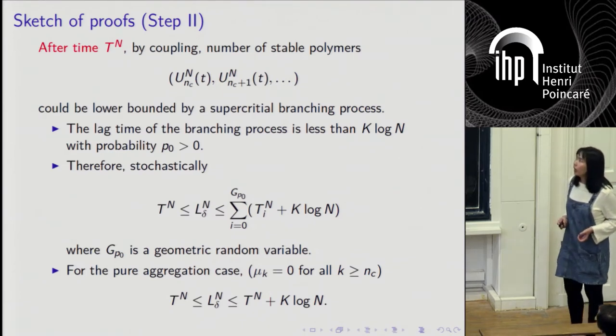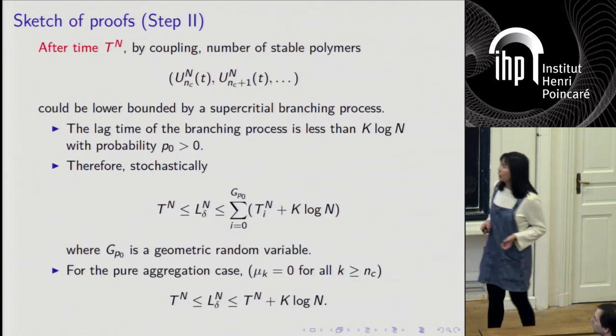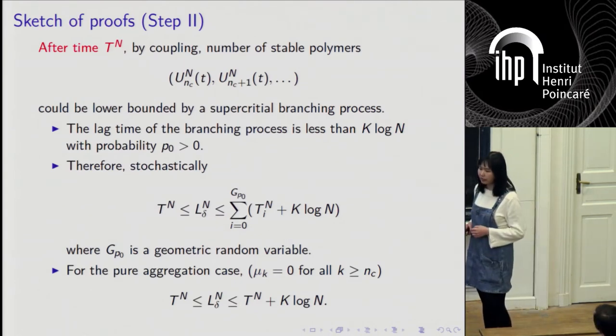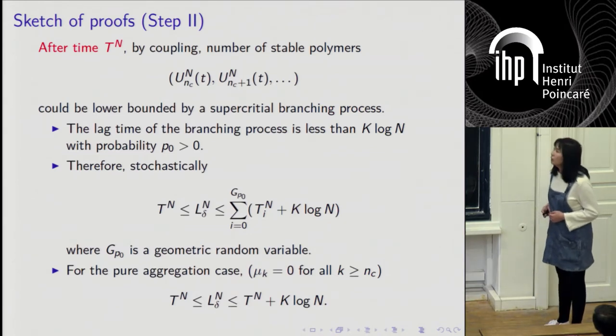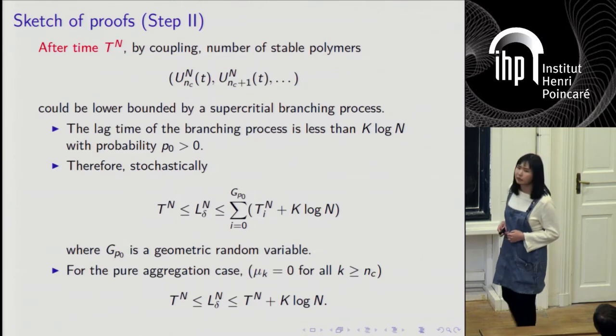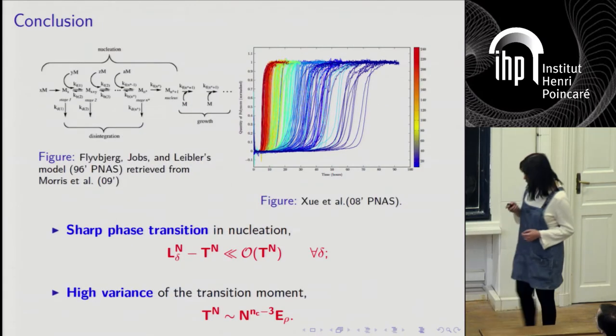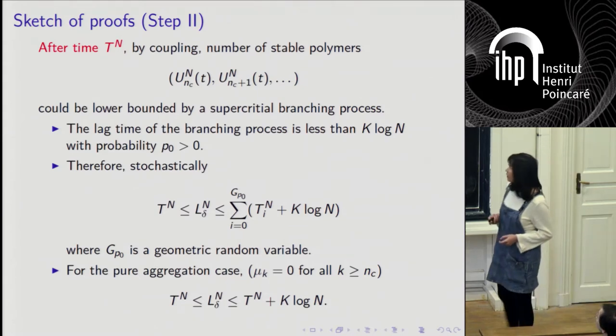For the pure aggregation case, because there is a real branching process, we can show that the lag time is upper bounded by T^N plus some constant times log(N) with high probability one minus epsilon.